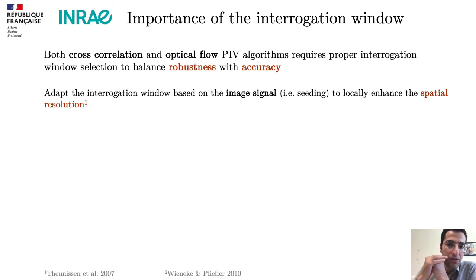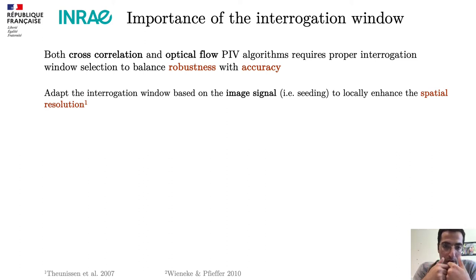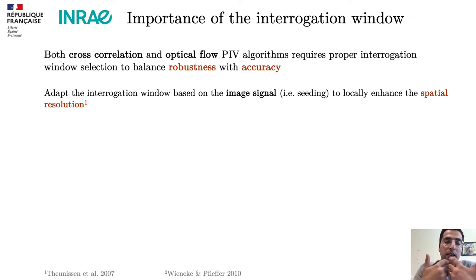First, let's talk about the importance of the interrogation window. We know that both cross-correlation and optical flow PIV algorithms require an interrogation window, and they both need to size and shape this window appropriately in order to maintain the balance between accuracy and robustness.